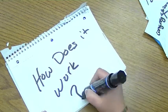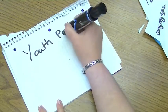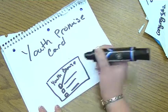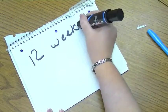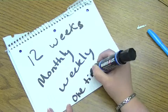So how does this work? At the end of the service, you can fill out a Youth Promise card located in the pew in front of you. You can choose to pledge throughout the 12-week period monthly, weekly, or donate a one-time gift.